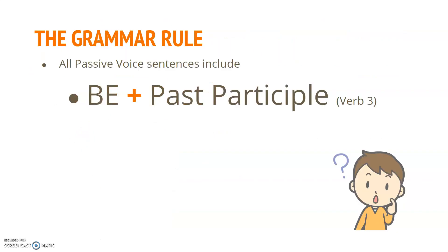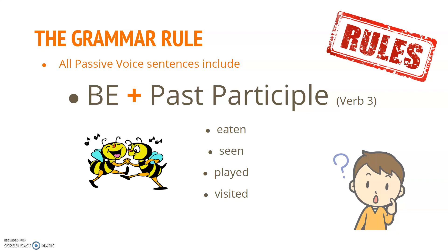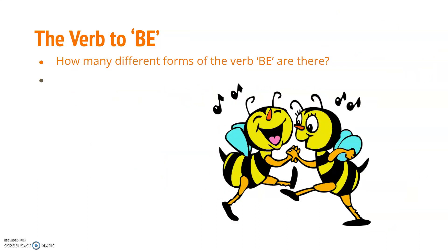So how exactly do we form the passive voice? The grammar rule to remember is: BE plus past participle. All passive voice sentences must include the verb 'to be' plus a past participle. Examples of past participles — also known as verb three — are: eaten, seen, played, visited. Now, 'be' has many different forms, so how many forms of the verb 'to be' are there?